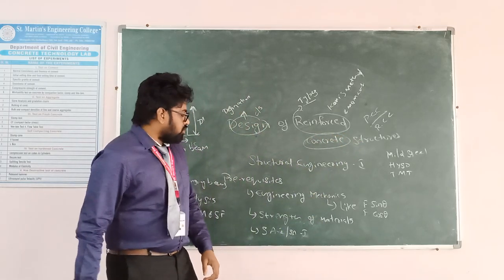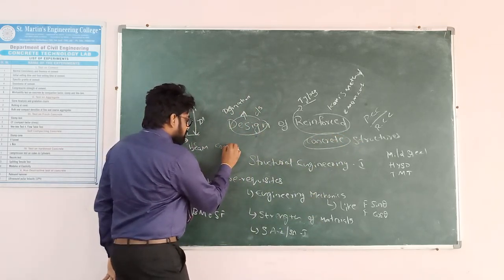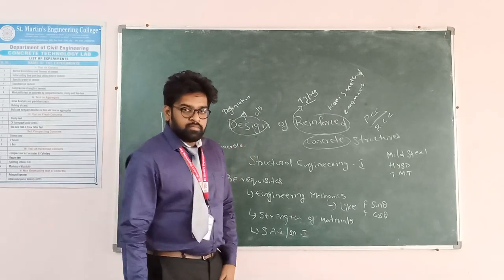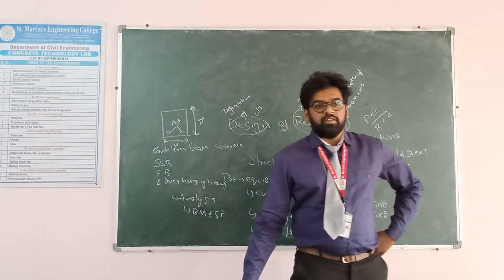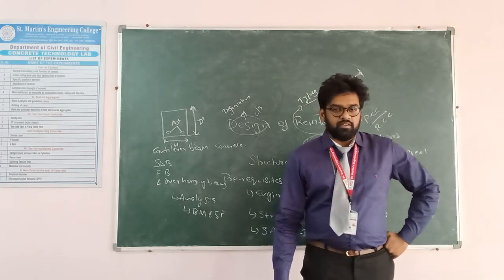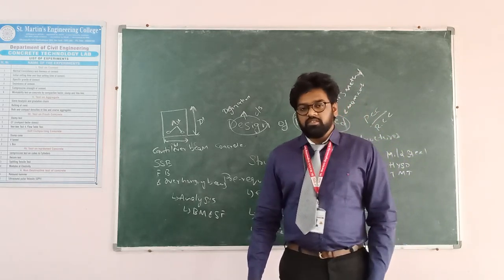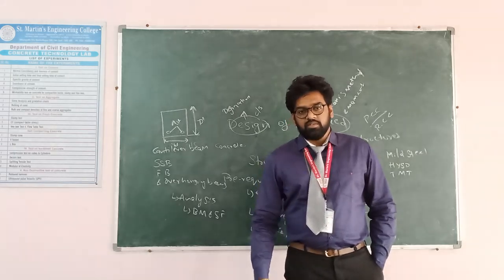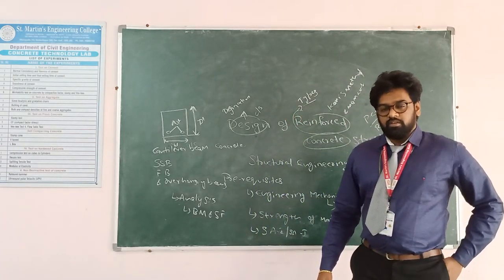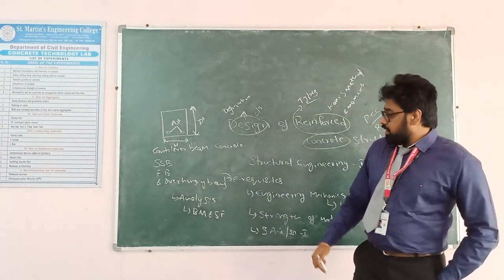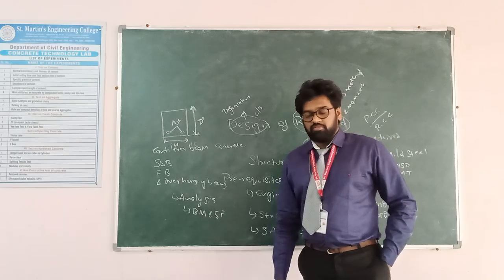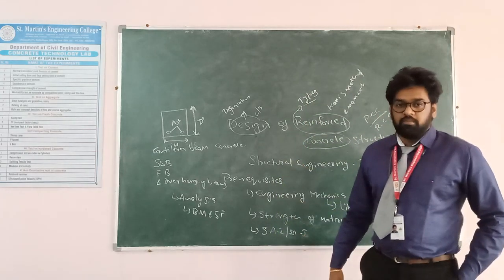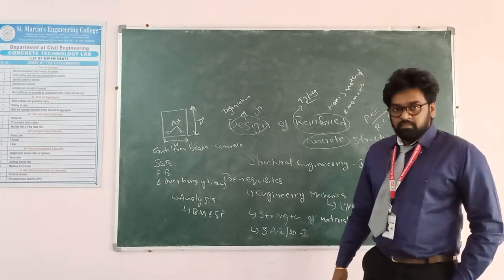Concrete is a mixture of cement, fine aggregate, coarse aggregate, and water. After mixing all these materials, concrete is formed. After curing for 28 days, it becomes a hardened structure.